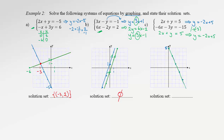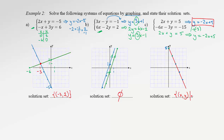So we still have y-intercept 5 and slope negative 2, meaning the second line lies exactly on top of the first. Therefore, every point on the green line is also a solution of the blue line, and the solution set is the entire line — every single point is a solution. We can record this using set builder notation: the solution set is the set of all ordered pairs x and y such that y equals negative 2x plus 5.